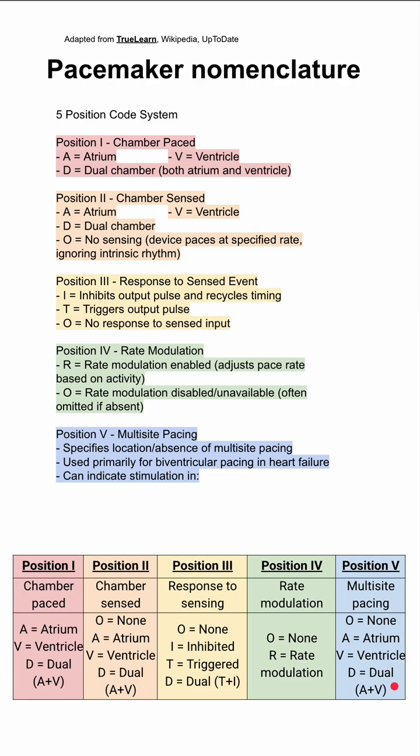The multi-site pacing can specify the location or absence of multi-site pacing. If it's absent, you'll have an O. And it can indicate stimulation in both atria, both ventricles, and in multiple sites within a single chamber as well.